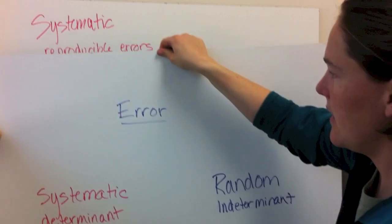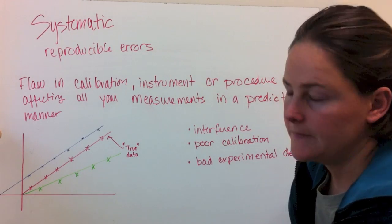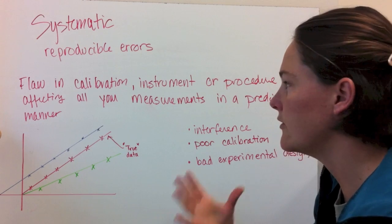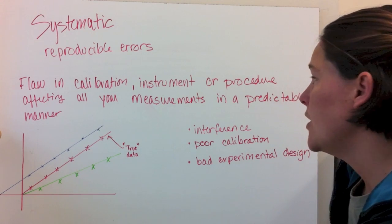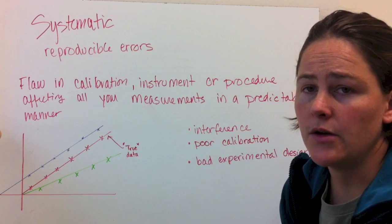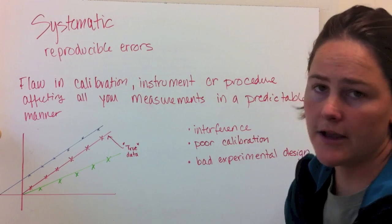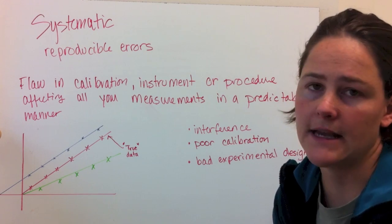Systematic error is a reproducible error. That means that it affects all of your data in the same way. It's some kind of flaw in the calibration or in the instrument function or there's an interference or the procedure isn't quite right, and all of that affects each individual measurement in a predictable and in the same type of way.